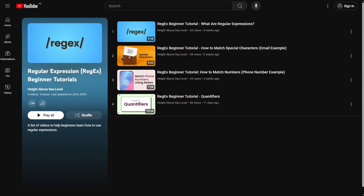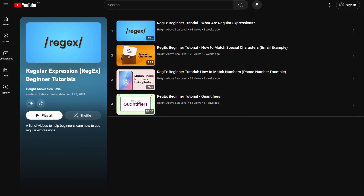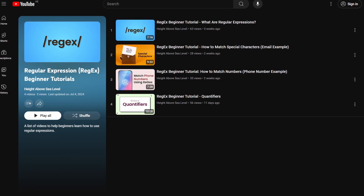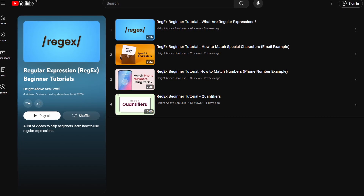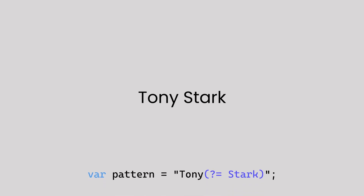If you don't know what all these symbols in the regex pattern mean, I've linked the earlier videos in this series to the top right of your screen to help you catch up. You can also add multiple characters after the equal sign if you wish. For example, if you only wanted to match the word Tony when it's followed by a space and the word Stark, you'll place the space and Stark after the equal sign. Note that the characters you put after the equal sign in the positive look-ahead aren't part of the match, so you'll only match Tony instead of Tony Stark.